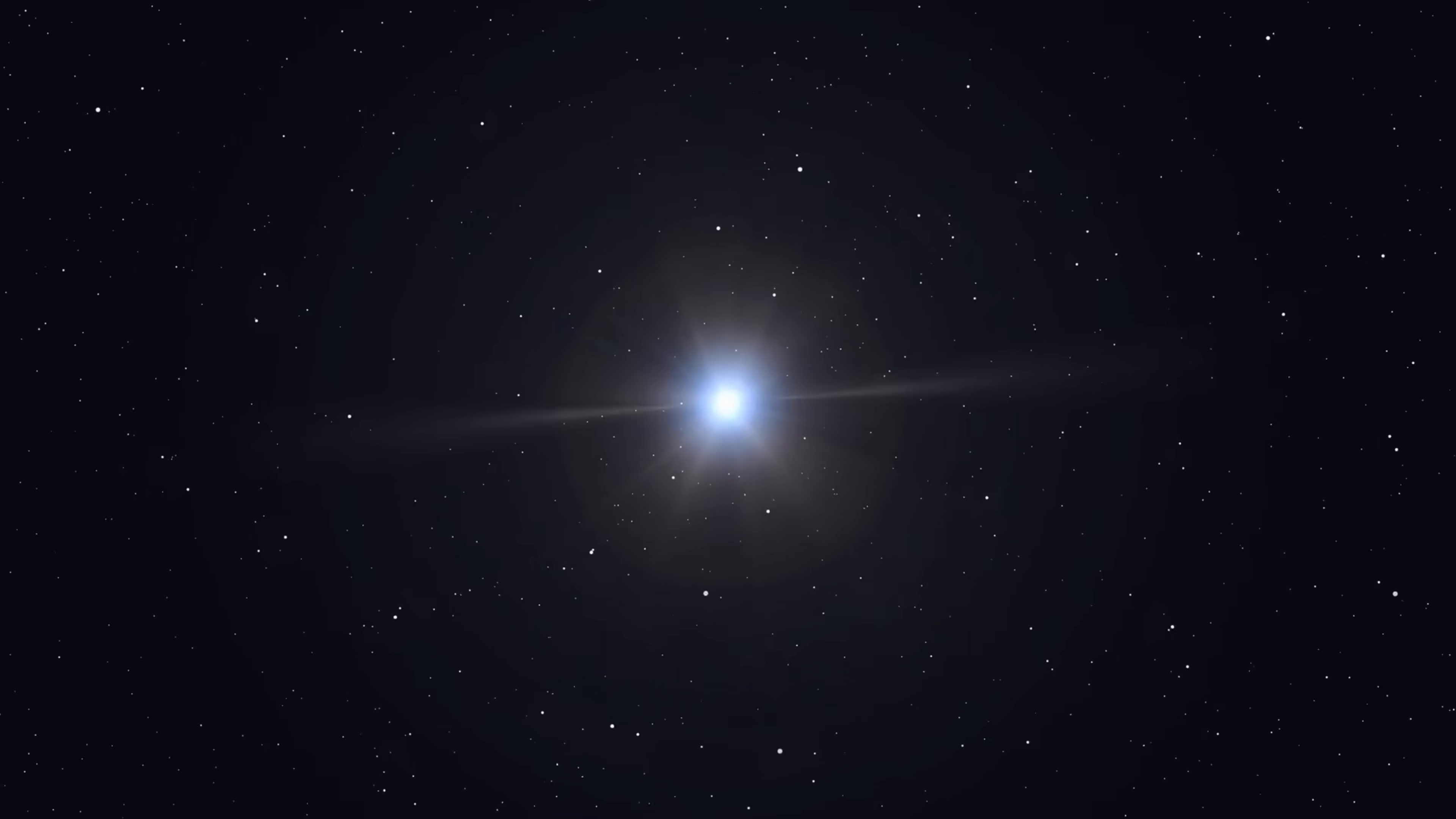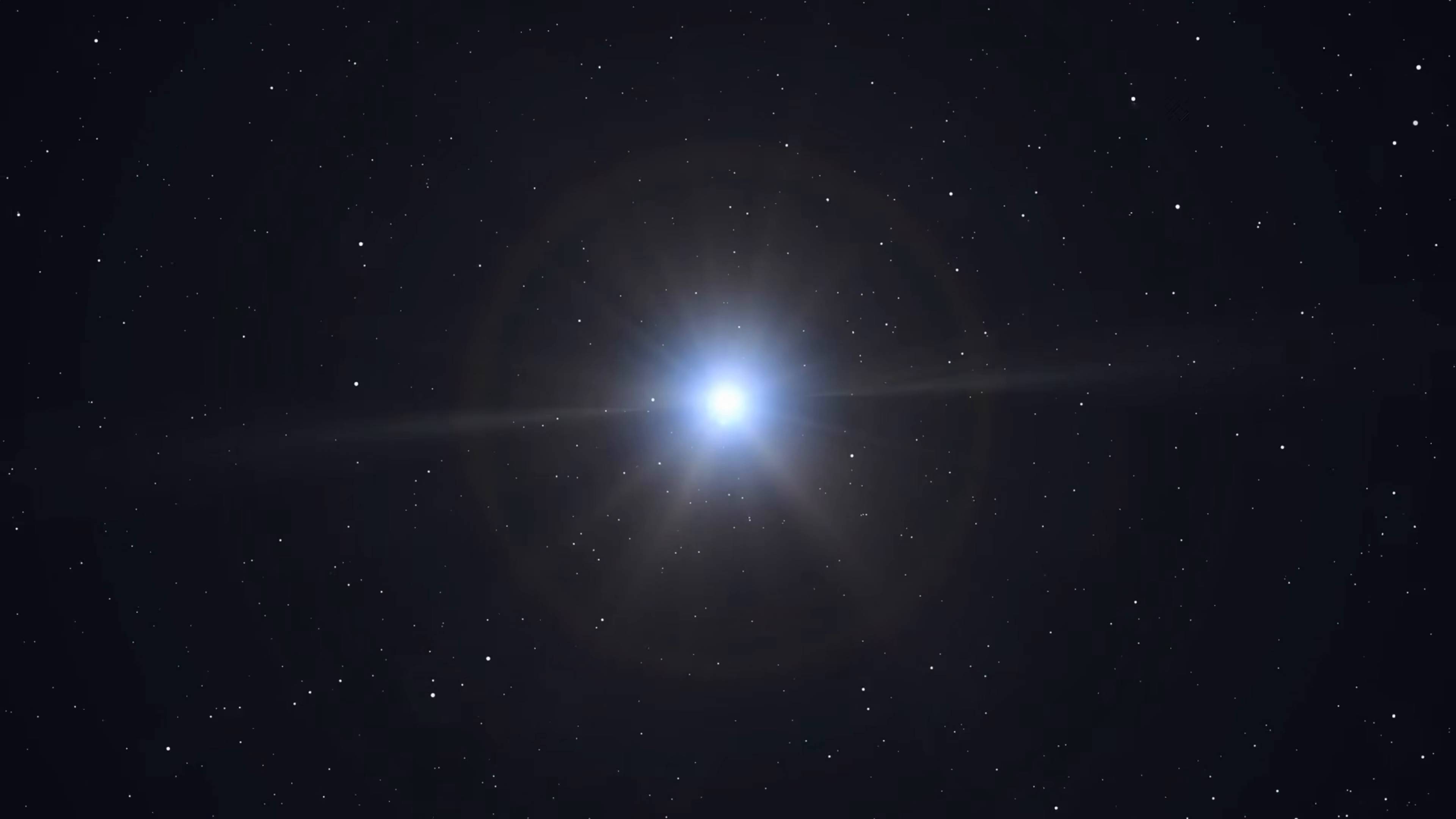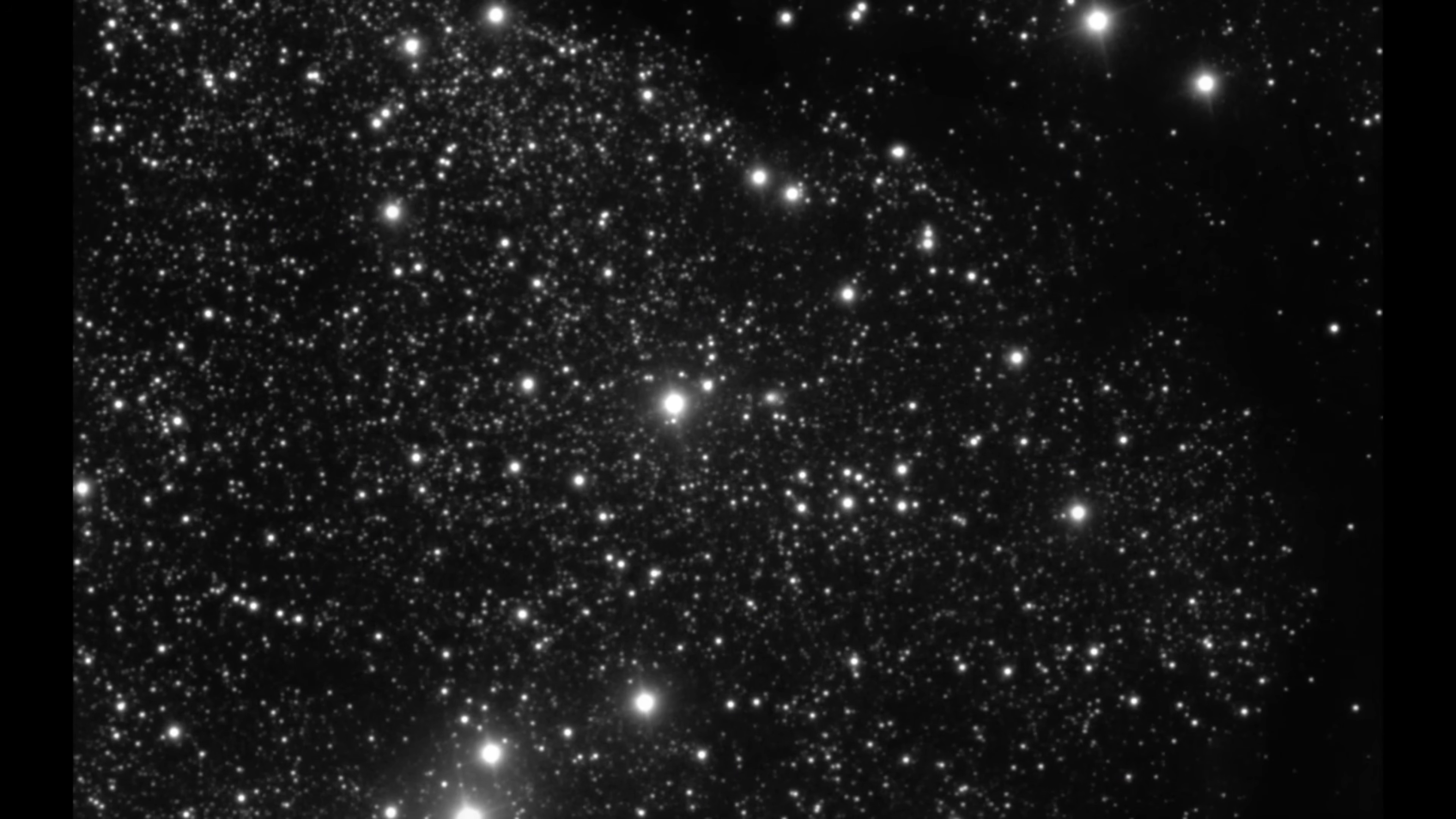Comet halos behave like smoke in a windstorm, always pushed back, always away. This one glows like a torch aimed directly at the wind itself.